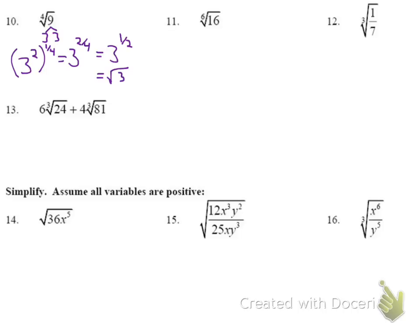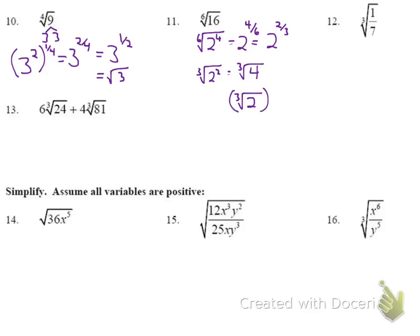Number 11 follows the same approach. 16 is 2 to the 4th, so we get 2 to the 4/6, which simplifies to 2 to the 2/3. We can write that as the cube root of 2 squared, which is the cube root of 4. This would typically be the more simplified answer.